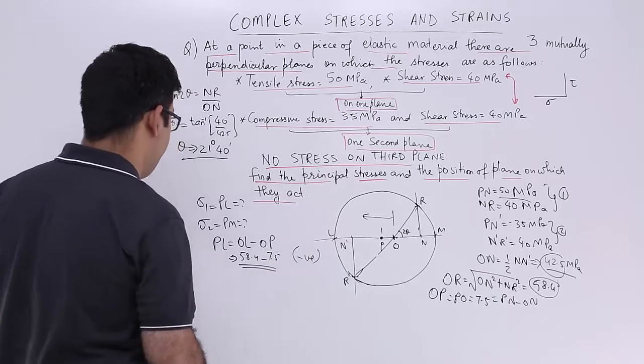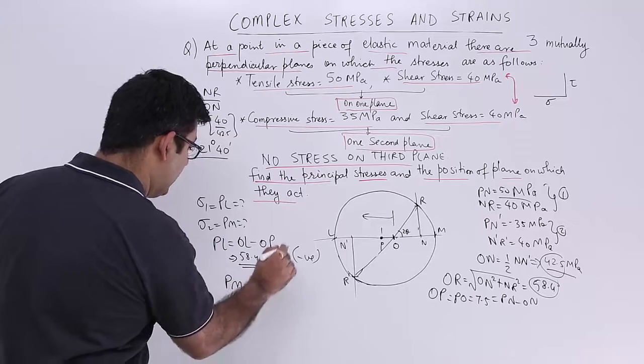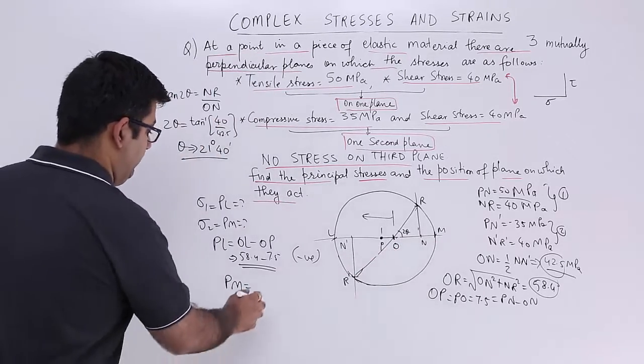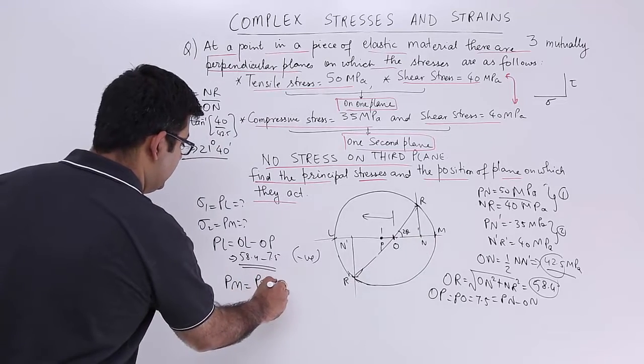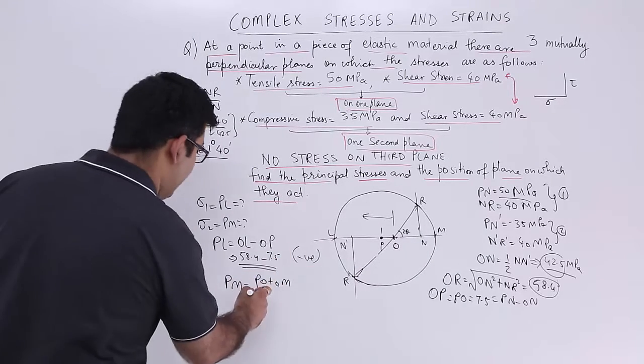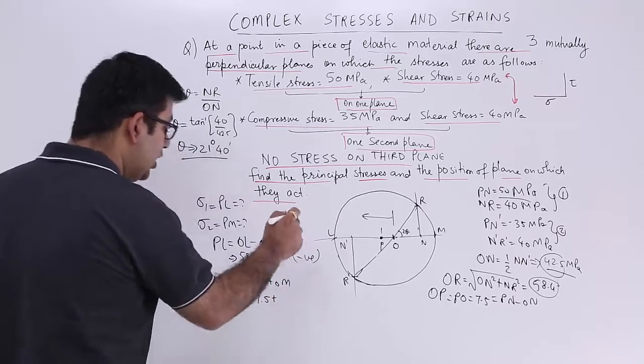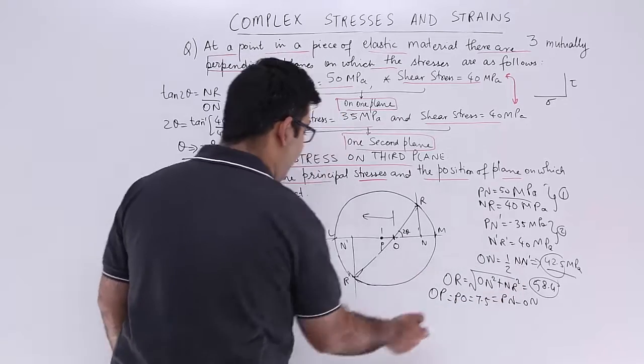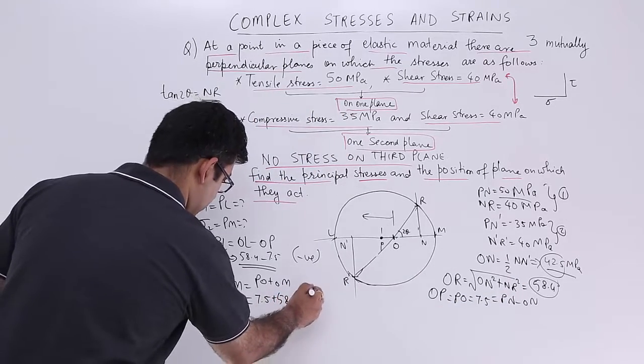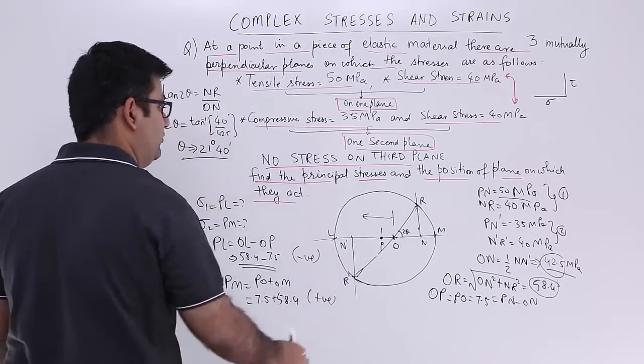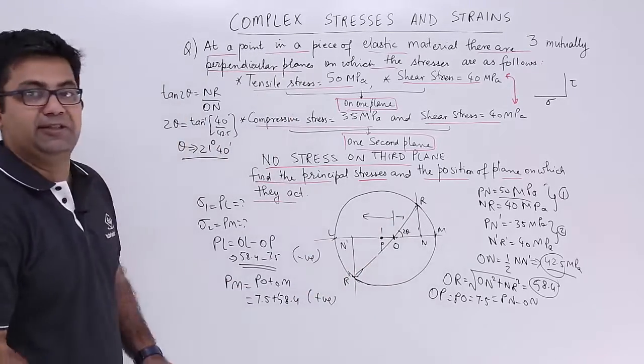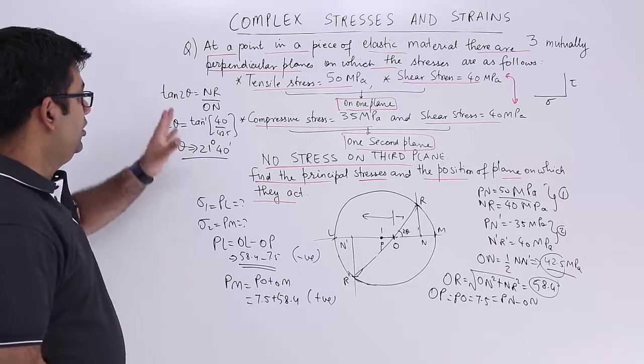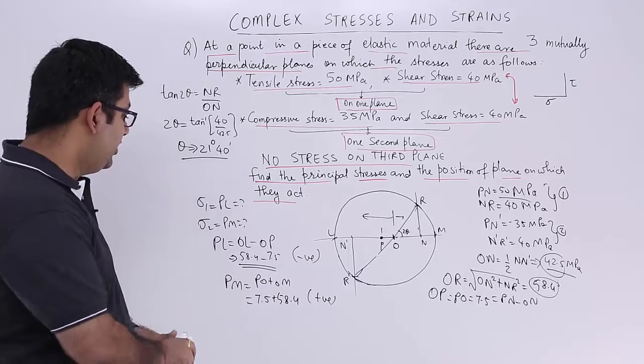Next is finding out PM. So PM is equal to PO plus OM. PO plus OM. Now what is PO? We just found out 7.5. What is OM? OM is nothing but the radius, which is OR which is 58.4. So this would be a positive stress because it is towards the right hand side of the origin.